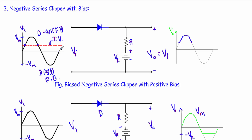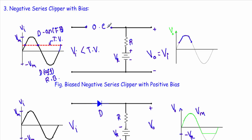Now consider the condition when the input voltage is less than the transition voltage — that means from this point towards the left side. When the input voltage is less than the transition voltage, our diode will be in reverse bias or in OFF state. When a diode is in reverse bias, I can replace it with an open circuit. With the diode replaced by an open circuit, the total current I will be equal to zero. As a result, the voltage drop across the resistor will be equal to zero.